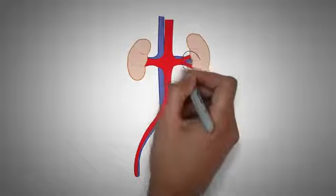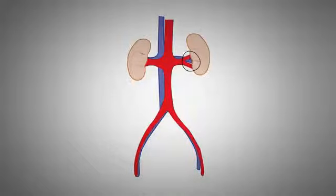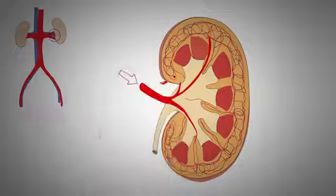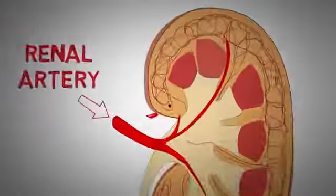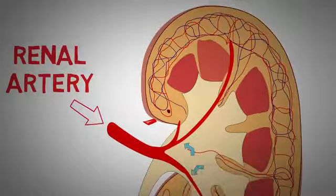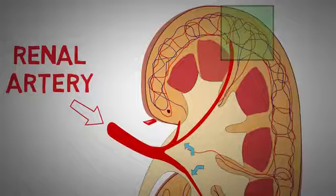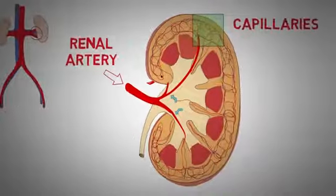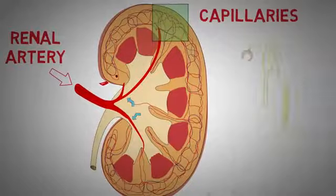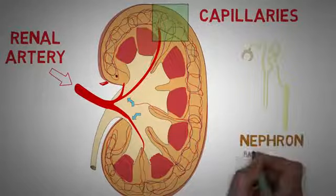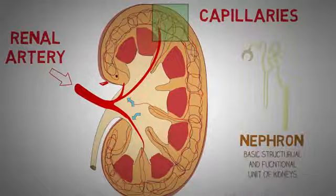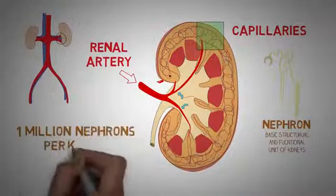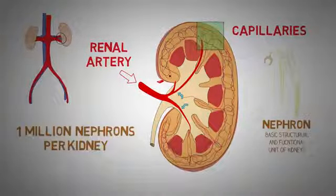The hilum of the kidney is the point where the blood vessels enter and leave the kidney. The blood enters through the renal artery, which after entering the kidney gets divided into many small branches. These small branches ultimately go to the cortex area and divide into many smaller branches known as capillaries. The cortex region contains the most nephrons in the kidney. The nephron is the basic functional unit of the kidney, and each kidney contains approximately 1 million nephrons — this is the main structure that filters the blood.